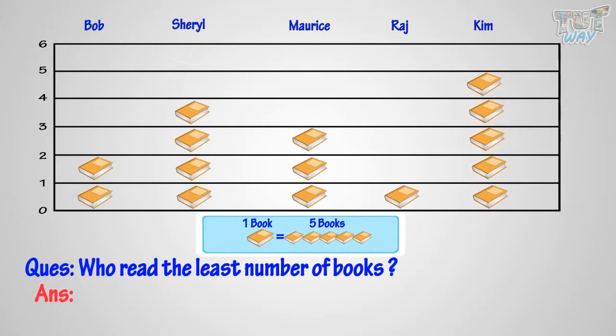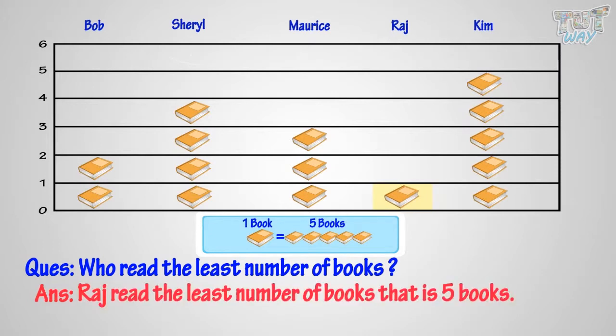Who read the least number of books? There is only one book symbol against the name of Raj, which is the least of all. So, Raj read the least number of books — that is, five books.